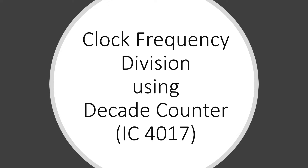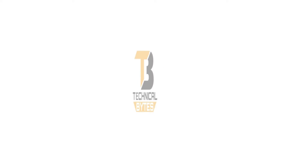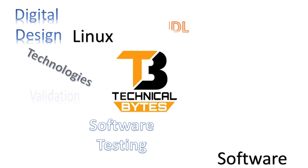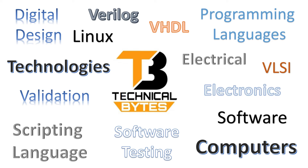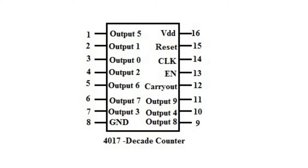So without wasting much time, let us get started. This is a pin diagram of IC4017 which acts as a decade counter. A decade counter is the one which has 10 stages, and this IC has 10 output signals. The obvious question would be: why 10 output signals? Because it is not a binary decade counter — it is a one-hot decade counter.